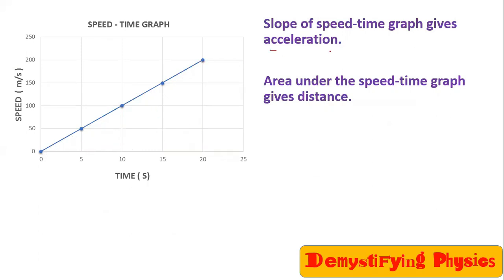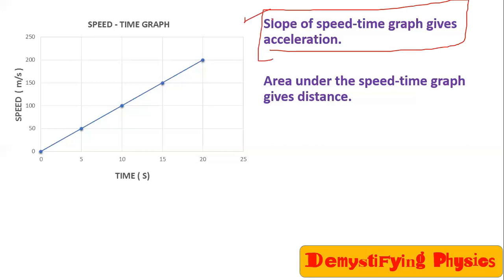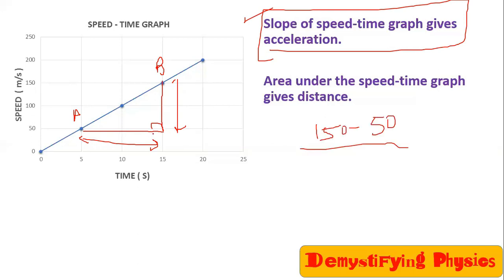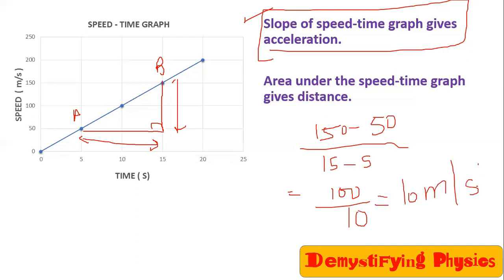To find acceleration, you find the slope. Take any two points on the line and make a right triangle. Slope equals perpendicular divided by base. The perpendicular is 150 minus 50, and the base is 15 minus 5, giving 100 divided by 10 equals 10 meters per second squared. So the acceleration is 10 meters per second squared.